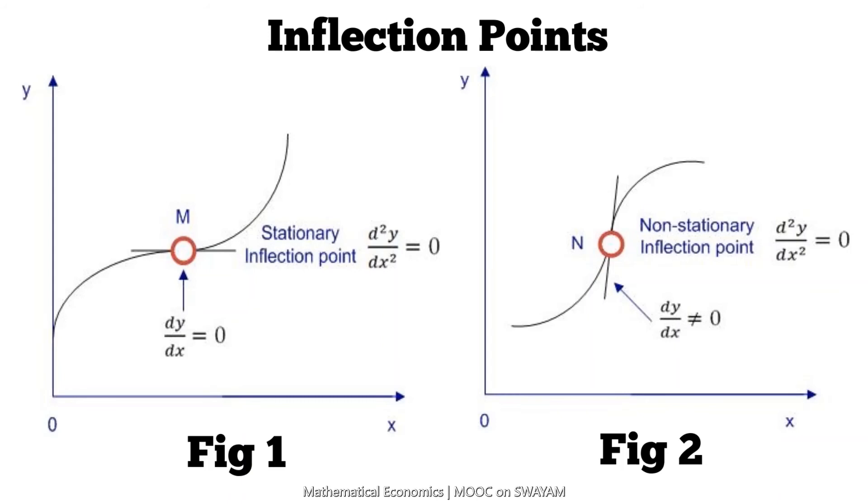Inflection means an act of curving or bending. Therefore, an inflection point is a point where a curve changes its curvature. So, we have derived the conditions for attaining a maxima and a minima.